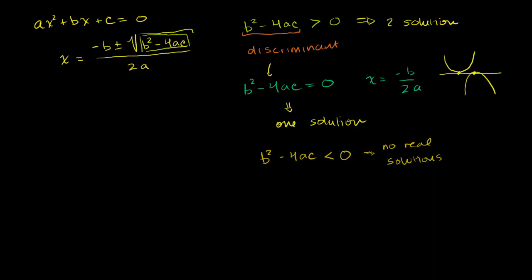There's more to think about: if we do have a positive discriminant, we can consider whether the solutions will be rational or not. If b² - 4ac is something like 2, we'll have √2 in our answer — an irrational answer. But if b² - 4ac is 16, that's a perfect square, so taking the square root gives us a rational answer.